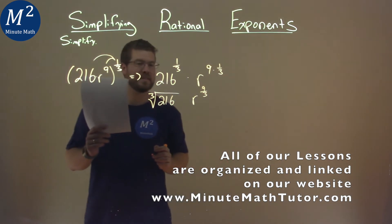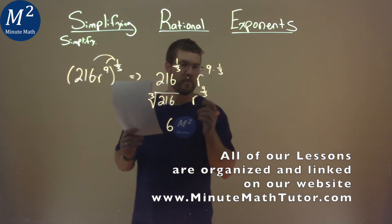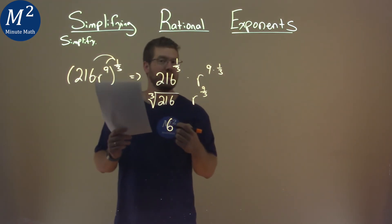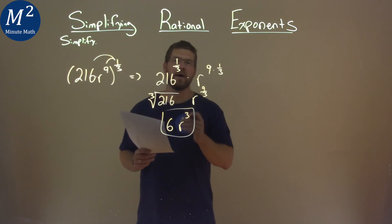The third root of 216 is just six. r to the, well, nine-thirds power, nine divided by three is three. So we have r to the third power. And so my final answer here is just six times r to the third power.